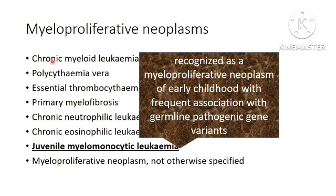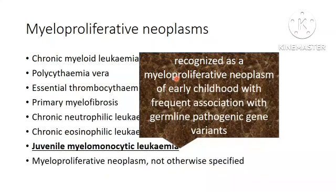Myeloproliferative neoplasms include chronic myeloid leukemia, polycythemia vera, essential thrombocythemia, primary myelofibrosis, chronic neutrophilic leukemia, chronic eosinophilic leukemia, and MPN-NOS. They have now included juvenile myelomonocytic leukemia under myeloproliferative neoplasms, because it has been recognized as a myeloproliferative neoplasm of early childhood with frequent association with germline pathogenic gene variants.